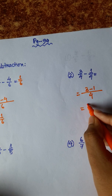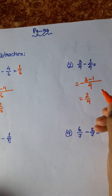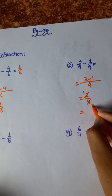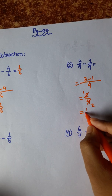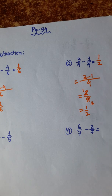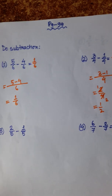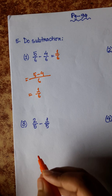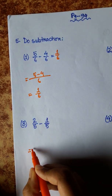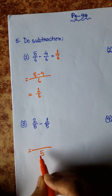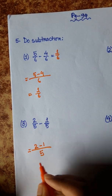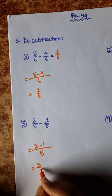3 minus 1 is 2, so 2 by 4. Dividing by 2 gives 1 by 2. Number 3: 2 by 5 minus 1 by 5 — denominator same, 5, numerator 2 minus 1 is 1 by 5.